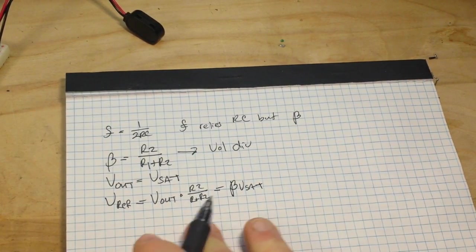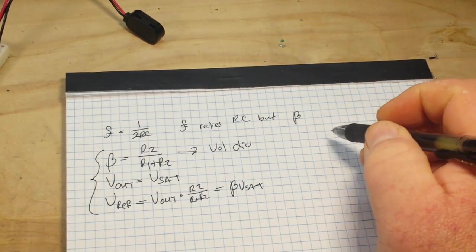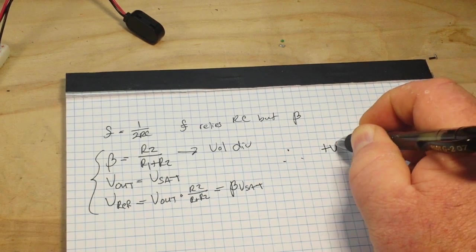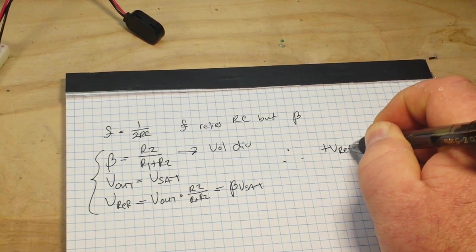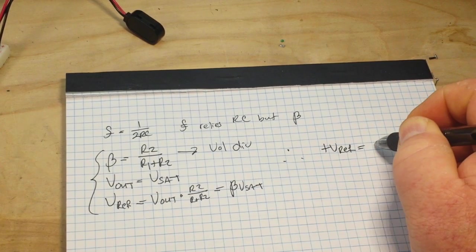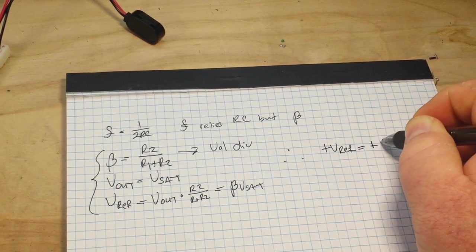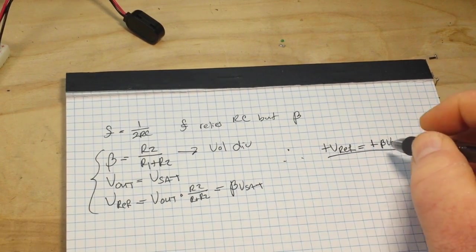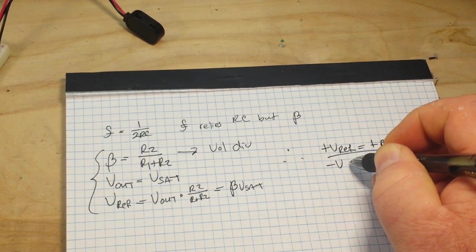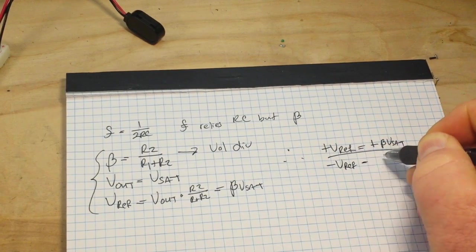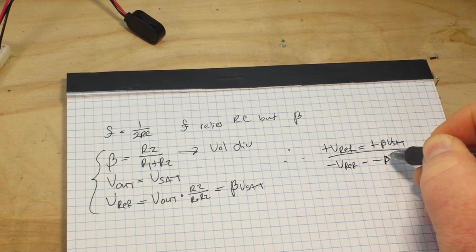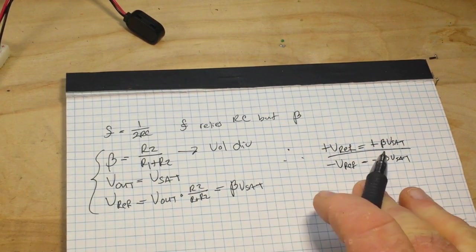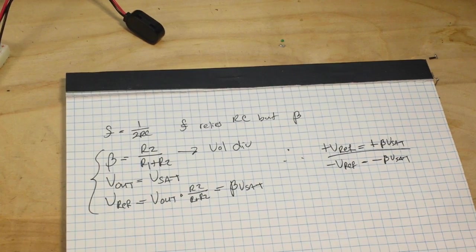So once we know all of these three things right here, we can say that our positive Vref and negative Vref equal β times the saturation voltages. So those are the things that we need to know in order to figure everything out.